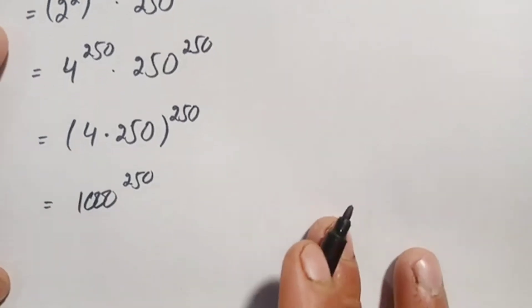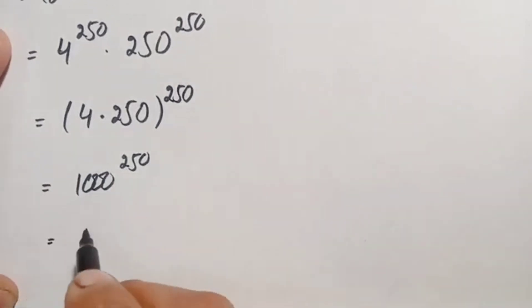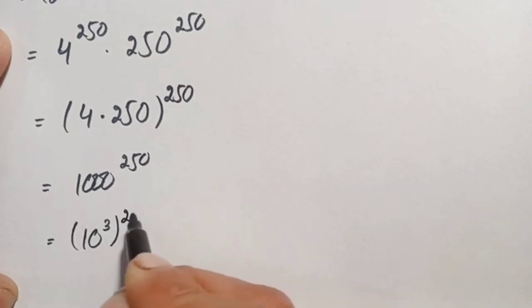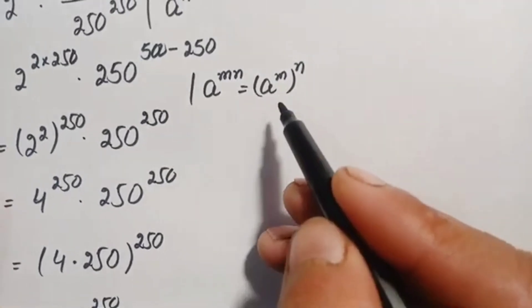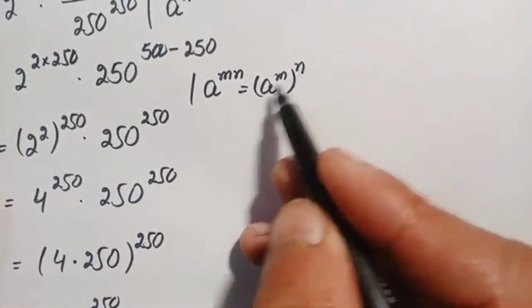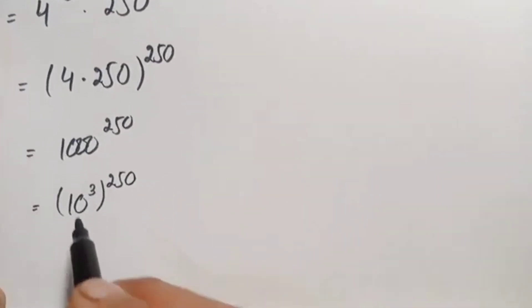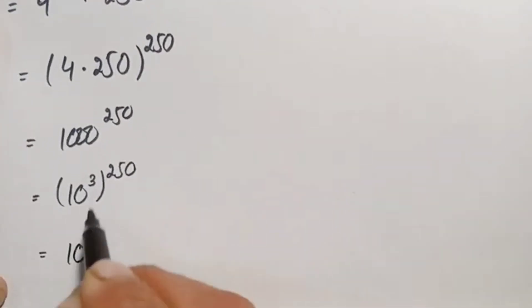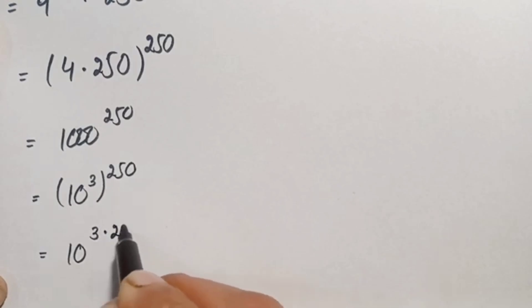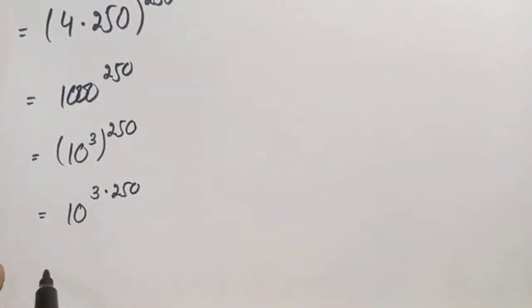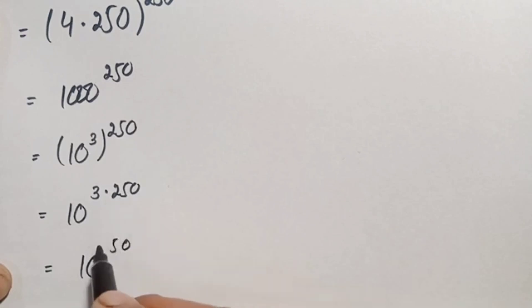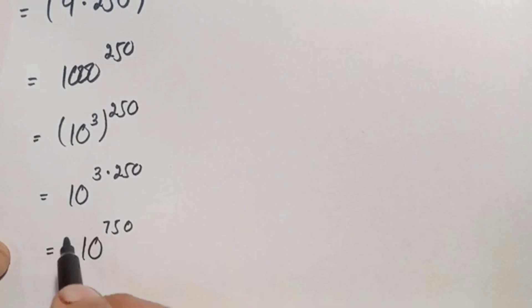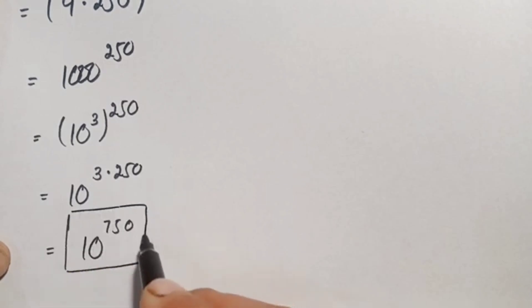We convert 1000 to its exponential form: 1000 equals 10 cubed. So we have 10 cubed, whole raised to power 250. Applying the identity, we multiply the powers: 3 times 250 equals 750. Therefore, our answer is 10 raised to the power 750.